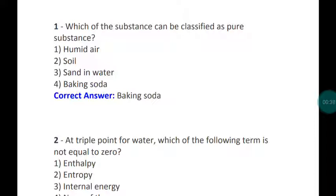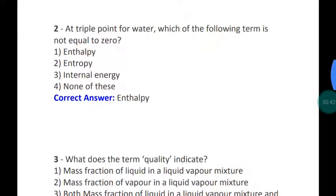Question number two: At the triple point of water, which of the following term is not equal to zero? At the triple point of water, entropy is zero, internal energy is zero, but enthalpy is not zero. So at the triple point of water, enthalpy is not zero.